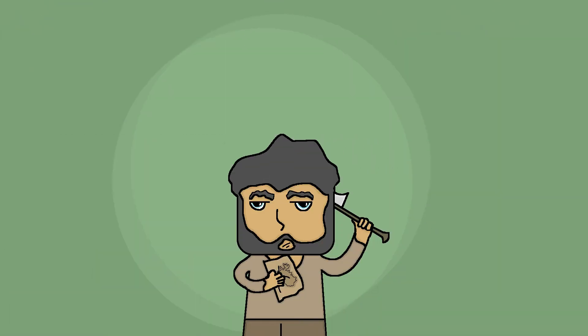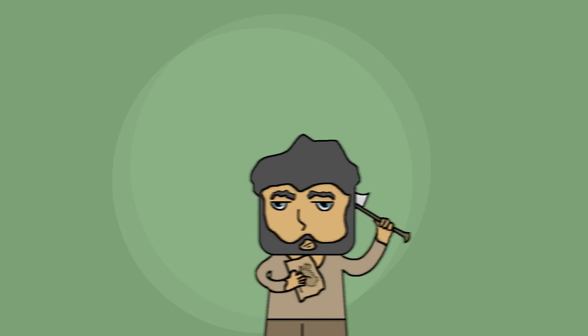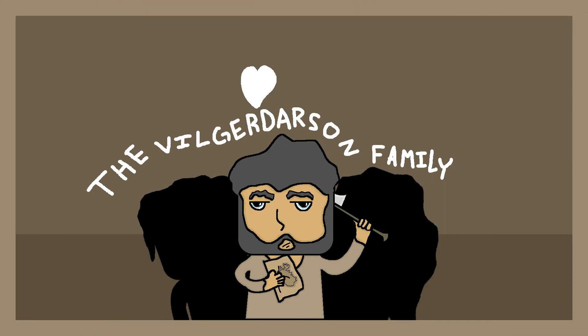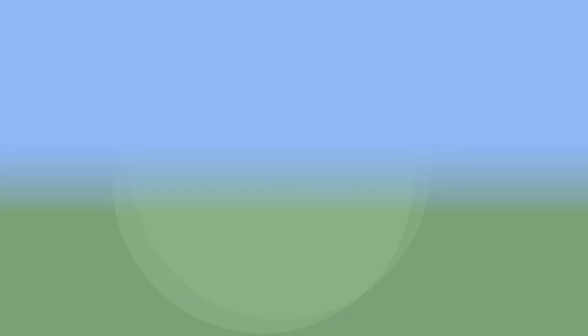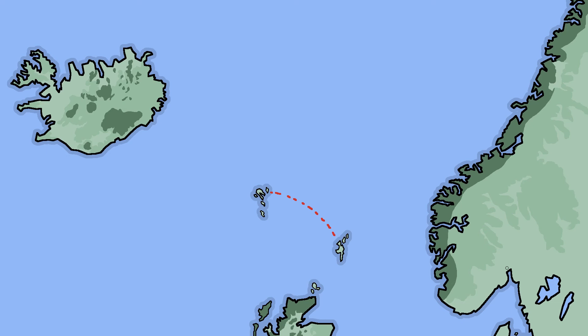Floki Vilgerdarson became enthralled by the island that Gardar had discovered. Upon hearing good things about the island, Floki decided to take his family to the island. They first arrived in the Shetland Islands, where his daughter drowned in an accident. After the drowning, he took his family on the final leg of the journey to the island.